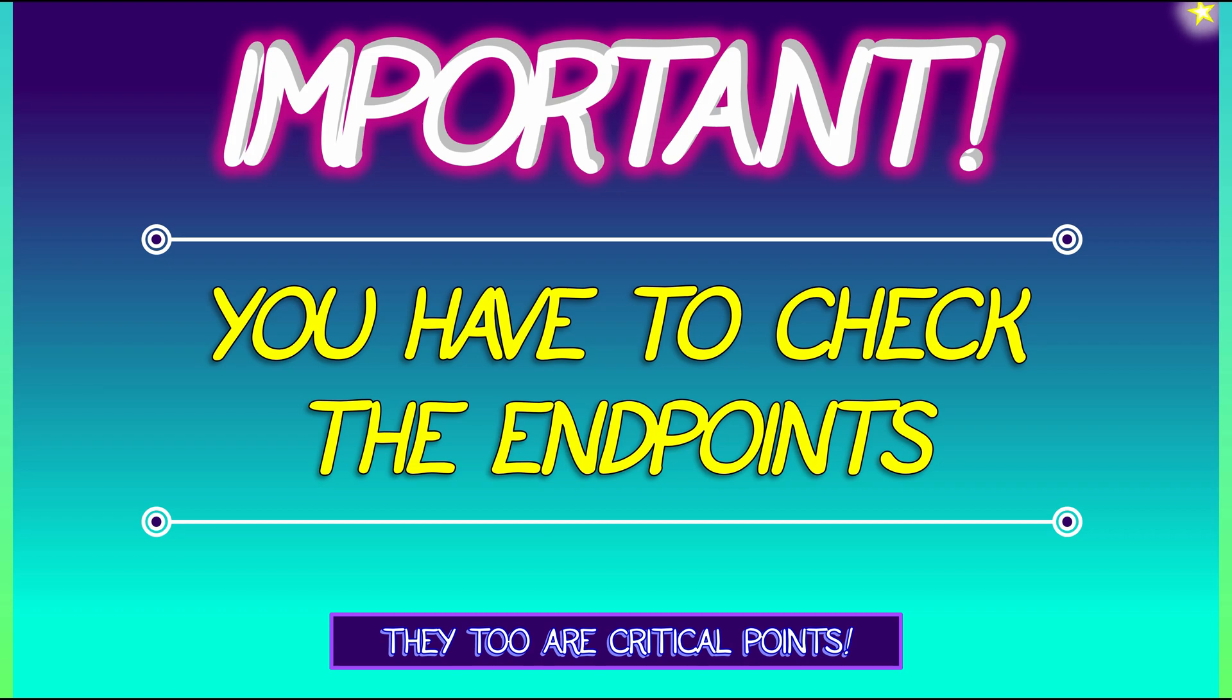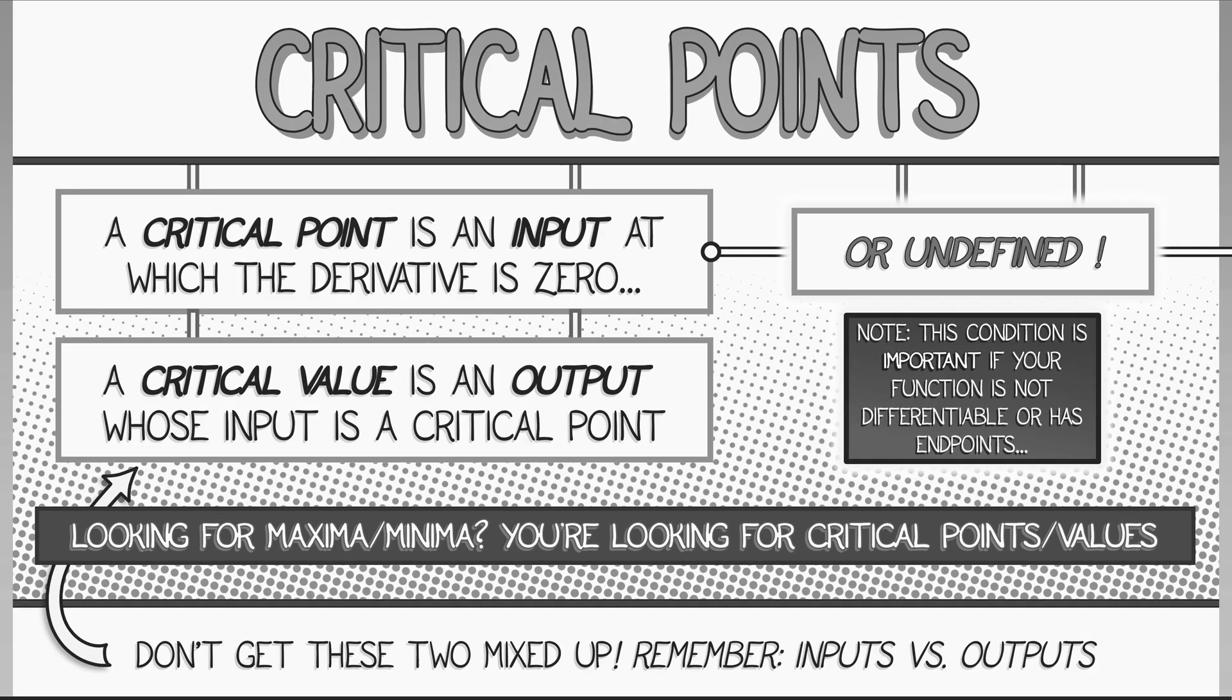Because they, too, are critical. They are part of the critical point set. Remember our definition of critical points? Remember how we said it's where the derivative is zero or undefined. And if you have an interval with some endpoints, those endpoints are places where technically the derivative does not exist. Because you have to compute the derivative by a limit, a two-sided limit. And if you can only access it from one side, technically derivative doesn't really exist there. It's still a critical point.